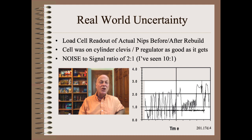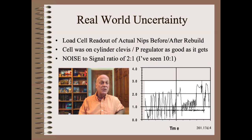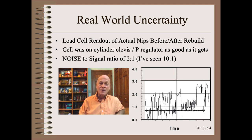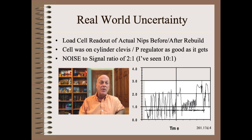Looking at the load on a cylinder clevis as read by a load cell — note that the pressure regulator, which is already a closed-loop device, was as good as you would normally find on industrial equipment. In this example, we would not talk about signal-to-noise ratios. Here, the noise is bigger in size than the signal, roughly 2 to 1. This example, by the way, is one of the most common winders in one of the most technologically mature of the web industries: the secondary arms on a paper machine reel.